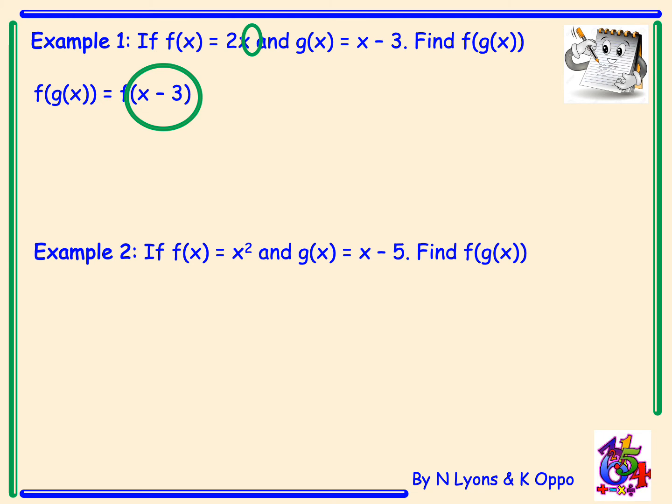If we then look at our f function, our f function is 2x. Where you see an x is where you have to replace with what's in the bracket. So the x beside the 2, we need to replace that with the full bracket x minus 3. So it's 2 times x minus 3. And the last step is multiplying your bracket out and collecting any like terms. So our final answer, f of g of x is 2x minus 6.